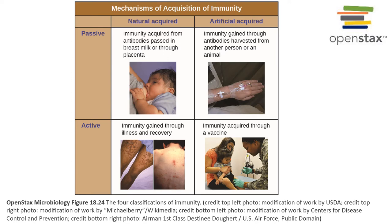Then when a second exposure occurs, the adaptive immunity is prepared to protect you from that pathogen. An artificially acquired active immunity will also stimulate the adaptive immune response in order to protect an individual for a long time.